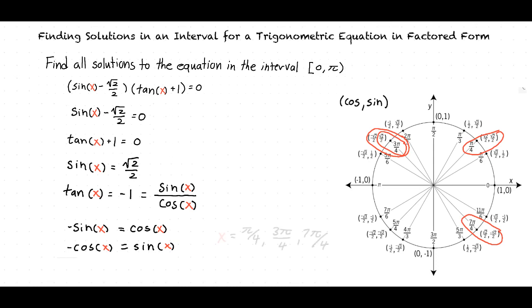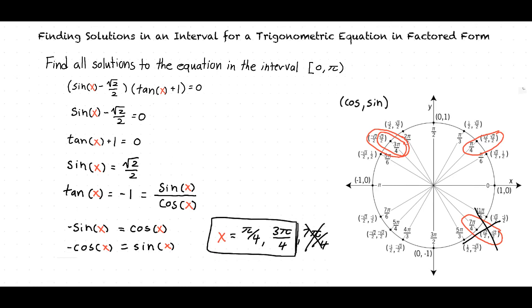So the answer to this problem is x equals π over 4, 3π over 4, and 7π over 4, right? Almost. The value 7π over 4 is not inside the interval 0 to π. So the final answer will be π over 4 and 3π over 4.